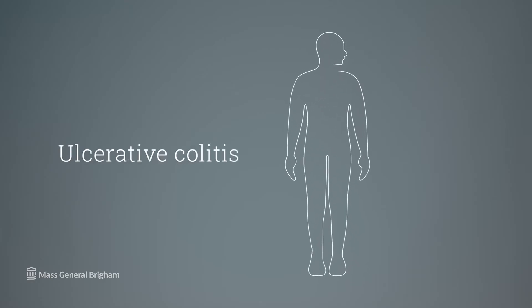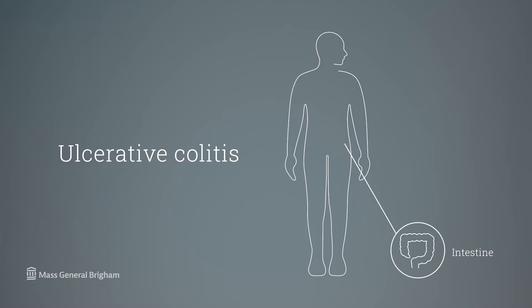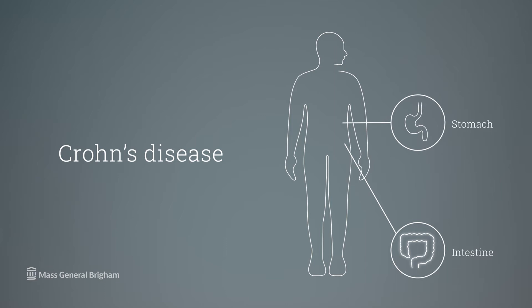Ulcerative colitis, as the name implies, leads to inflammation in the large intestine or colon. Crohn's, on the other hand, can affect anywhere in your gastrointestinal tract from your mouth to your anus.